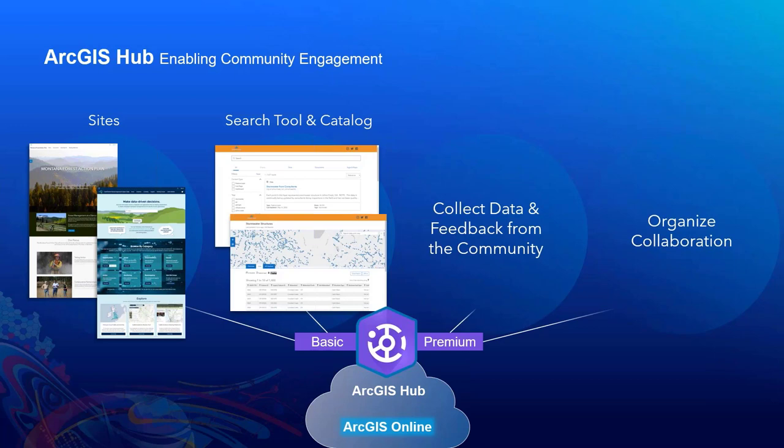This is more than a catalog because visitors to your site can download your authoritative data or directly access the data through the data API. Powerful indexing and searching capabilities let you filter and sort the data. Semantic search makes it easy to find items that are related to your search term. These capabilities are available to anyone who has an ArcGIS Online organization — we call it ArcGIS Hub Basic.